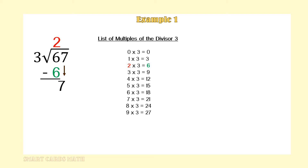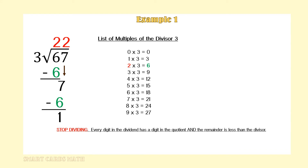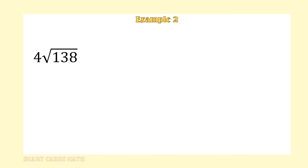How many groups of 3? Look at your multiples list — we can get two groups of 3 out of 7. Write 2 in the quotient. Multiply 2 times 3 to get 6. Subtract 6 from 7 to get 1. This is where the division process ends: each digit in the dividend has a digit in the quotient, and the remainder, which is 1, is less than the divisor 3.